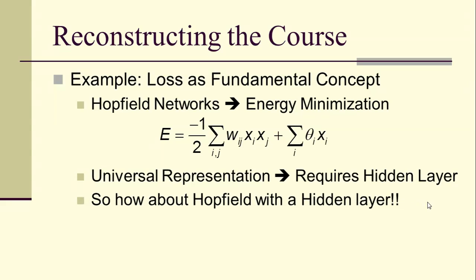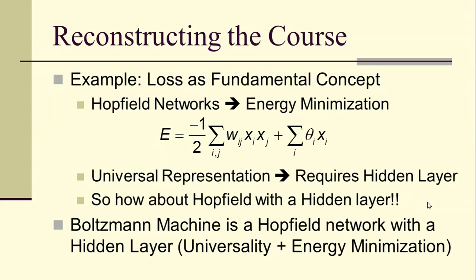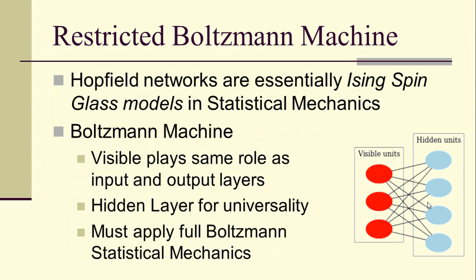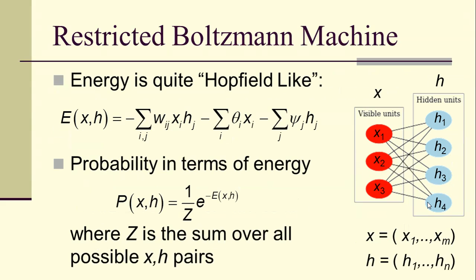So it just makes sense that we would somehow try to combine Hopfield networks with hidden layers, and that's what's known as the Boltzmann machine. And what we get is training via energy minimization and universality in the sense of multilayered perceptrons. A restricted Boltzmann machine comes from the idea that Hopfield networks are essentially what are known as icing spin glass models in statistical mechanics. But when we add a hidden layer, which will allow us to have a universal classifier or a universal machine, then it's only two layers, but the visible here is going to play the same role as the input and the output layers.